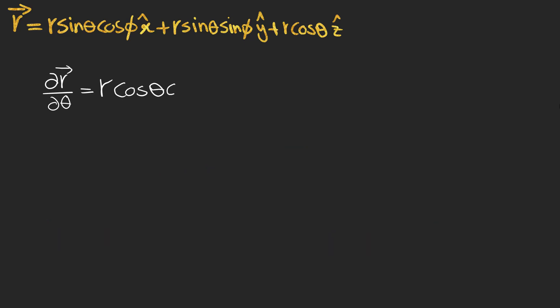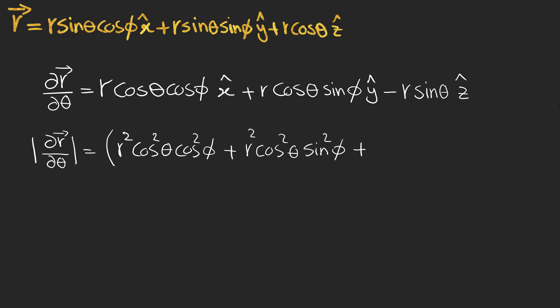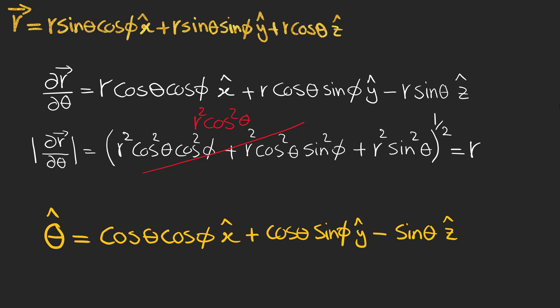We can do the same thing for theta and find the partial derivative of r with respect to theta. This time the magnitude is not one and turns out to be r. So after dividing the first expression by r, we have our second coordinate unit vector.